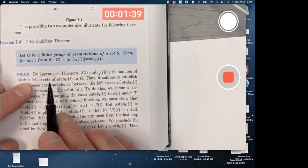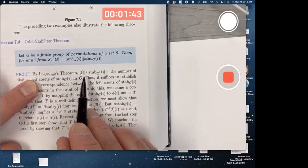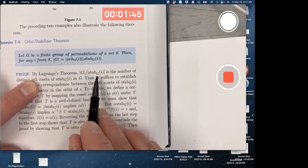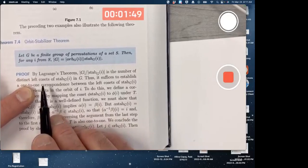So the first thing is to use Lagrange's Theorem. Lagrange's Theorem says that if you take the order of G and divide by the order of the stabilizer, you're going to get the number of distinct left cosets. That was part of Lagrange's Theorem.